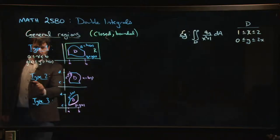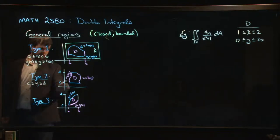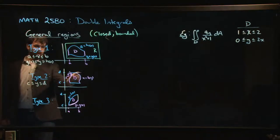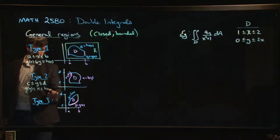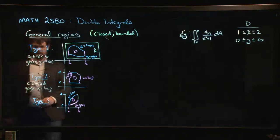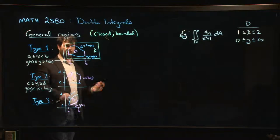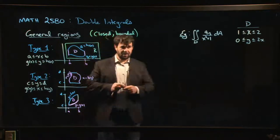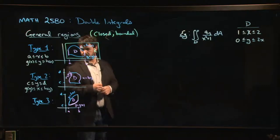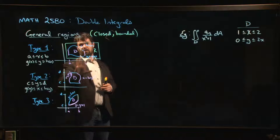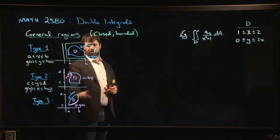Type 2 is the other way around: Y is bounded by constant values C and D, while X runs between two curves where X is defined as a function of Y. So we might have G of Y less than or equal to X less than or equal to H of Y. You can draw a rectangle around this region just as with Type 1.